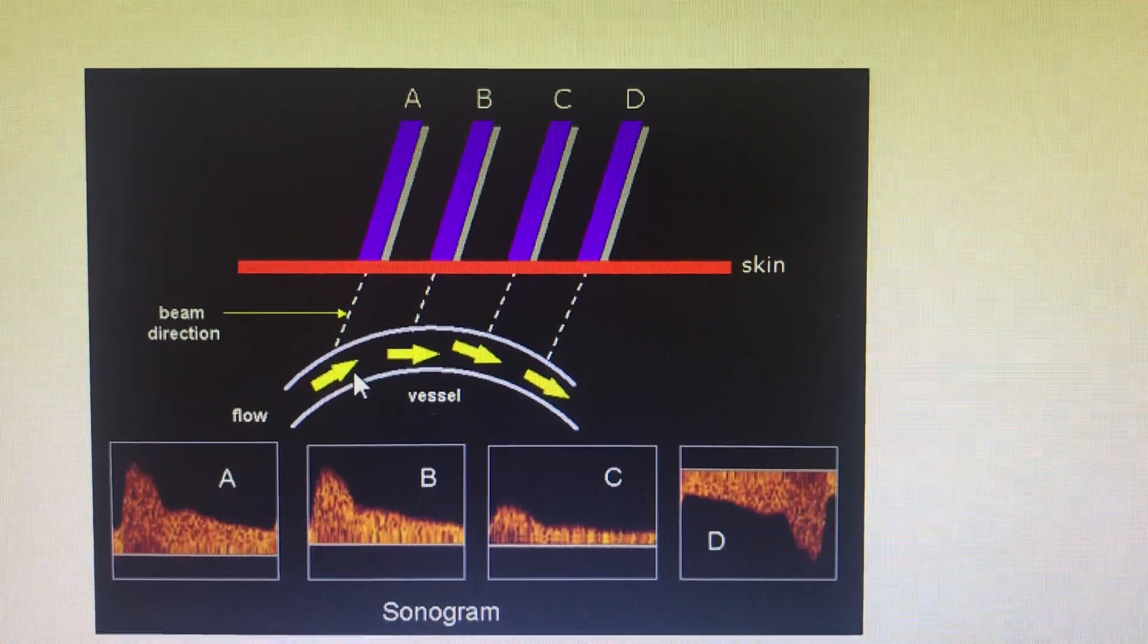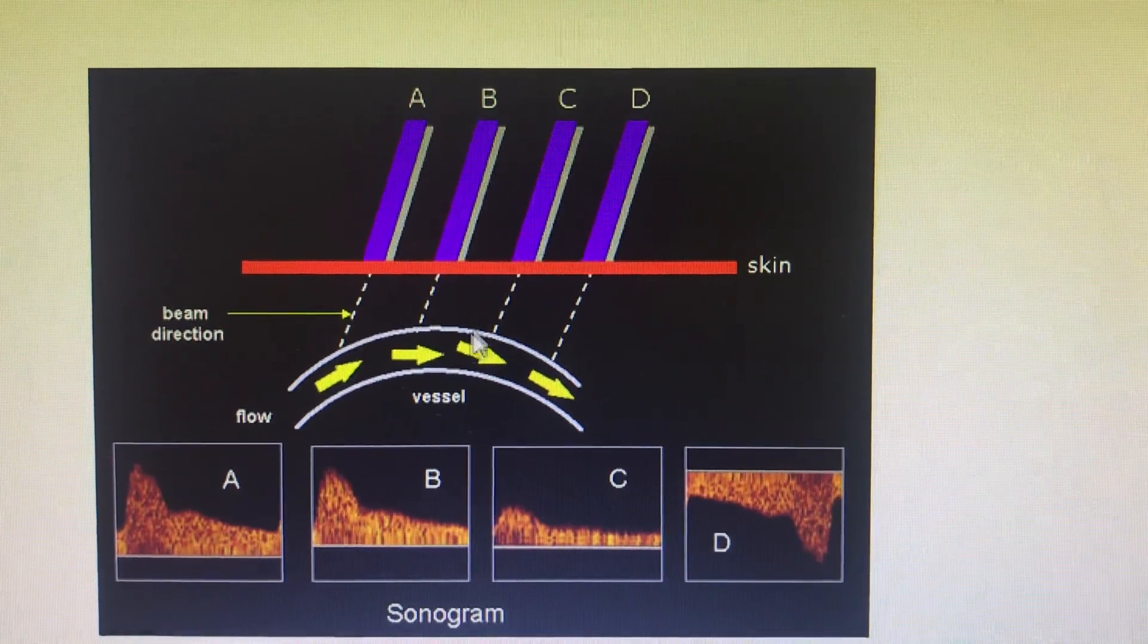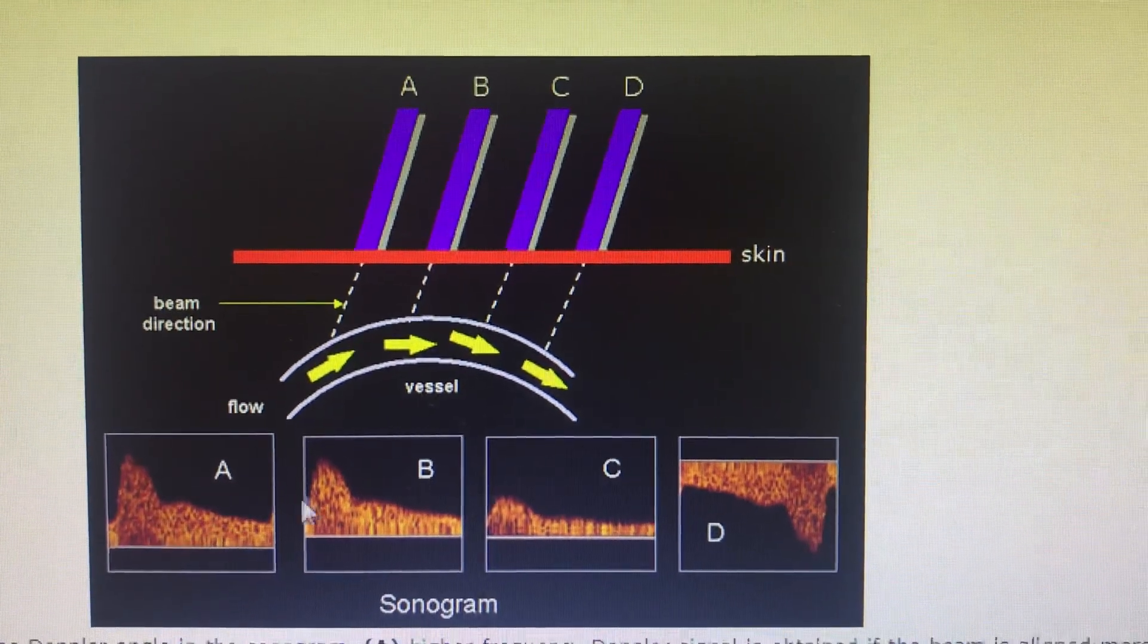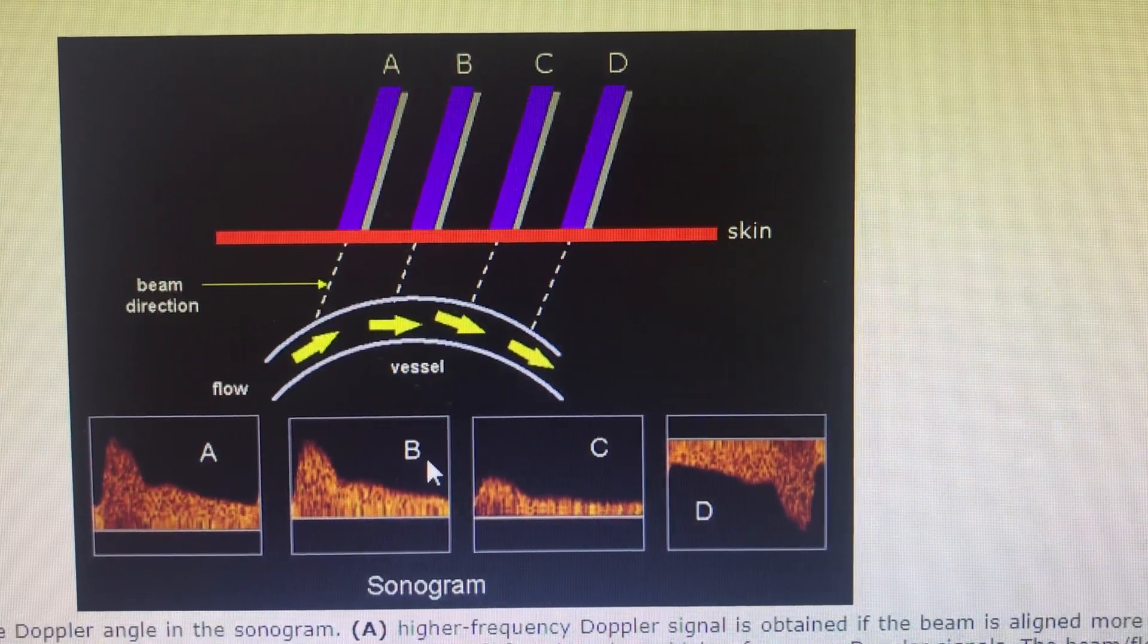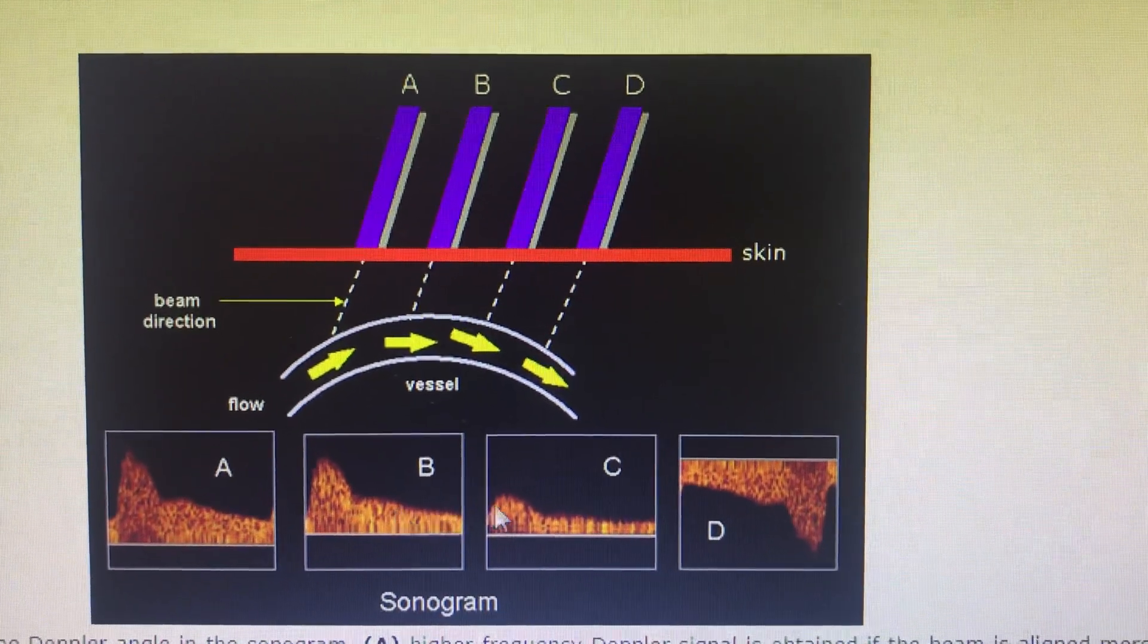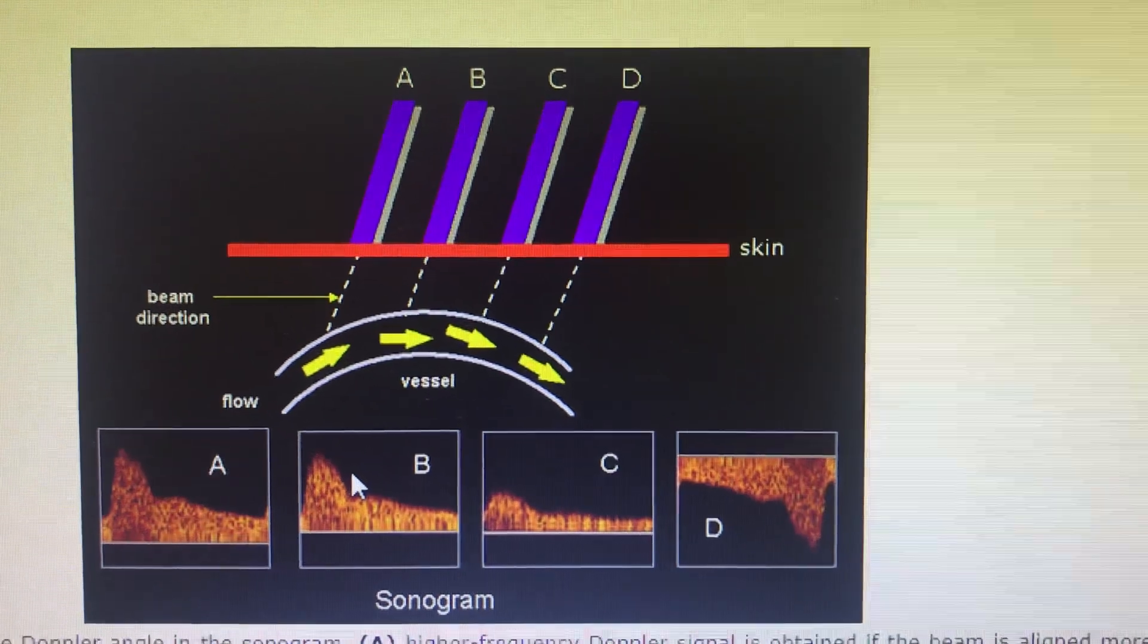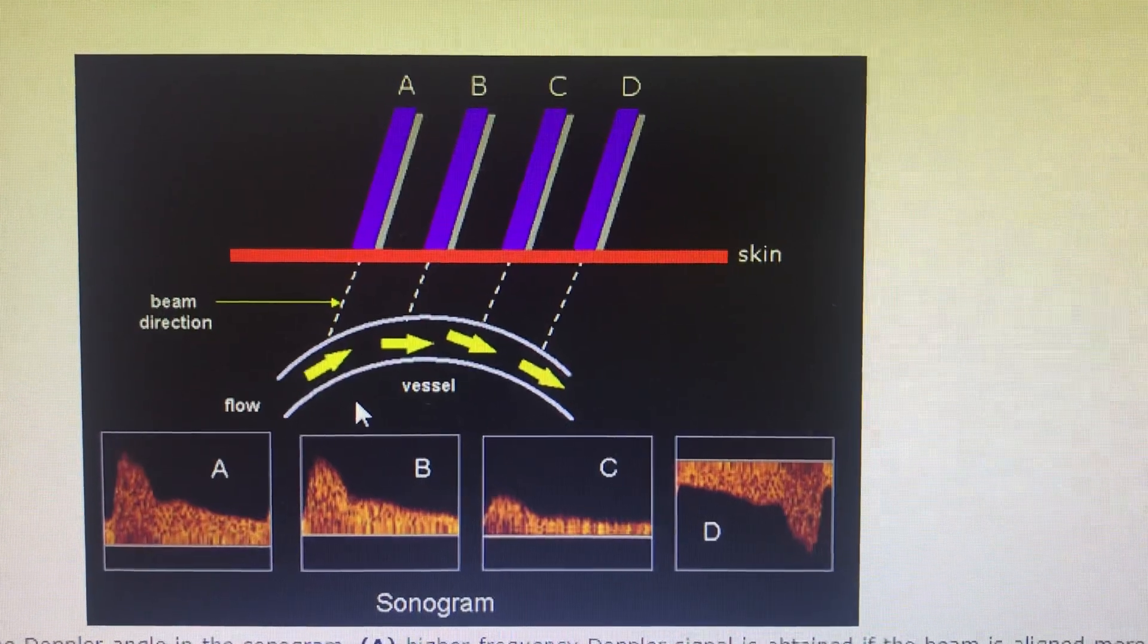When measuring across a valve, the gradient can be measured accurately. If the angle changes, the parameters you're measuring will change. The actual measurements you want to get - like pulmonary hypertension, TR velocity, aortic stenosis, aortic gradient, mitral valve regurgitation, mitral gradient, aortic regurgitation, PA pressure - all these will vary if the angle of the probe pointing towards the blood flow changes.